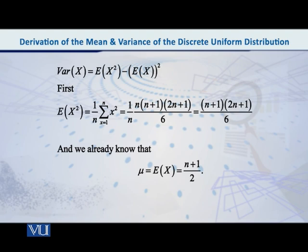So we substitute this expression here. So then obviously n will cancel with n and we are left with n plus 1 into 2n plus 1, over 6. This is simply the expected value of x square.